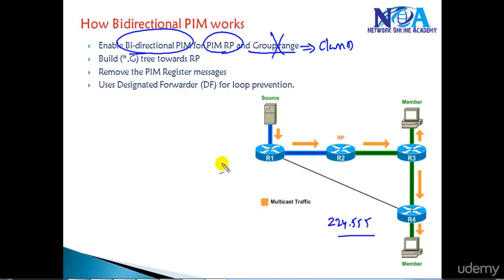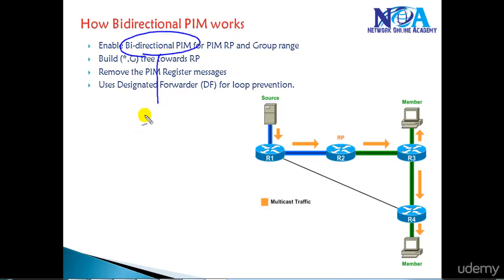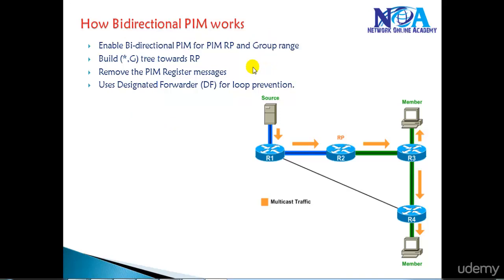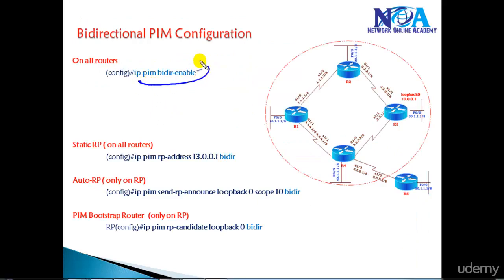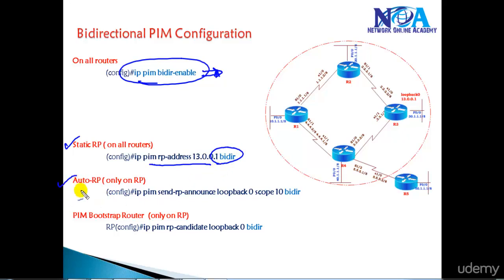Once we define Bidirectional PIM, it simply stops all S,G entries and stops the shortest path for the specific group range — or for all Class D addresses if no range is defined. The configuration is just one line: we need to enable 'ip pim bidirectional' on all the routers. If configuring a static RP, we add the RP address with the 'bidirectional' option at the end. If using Auto-RP or Bootstrap Router (BSR) method, we similarly add the 'bidirectional' keyword, and the RP also needs to be told it is running Bidirectional PIM.